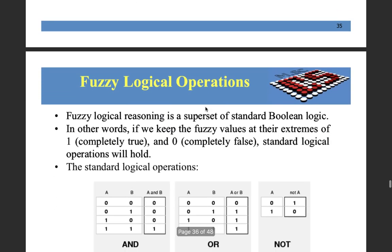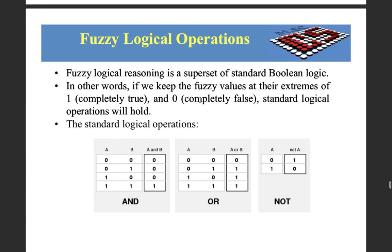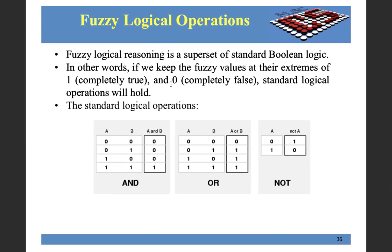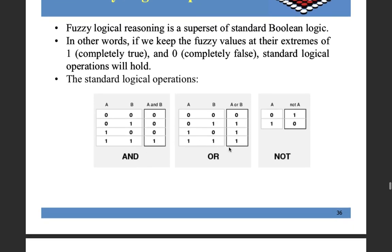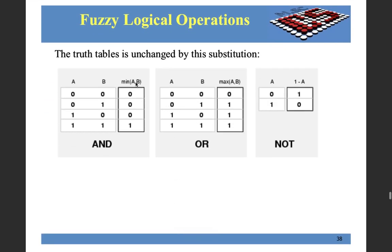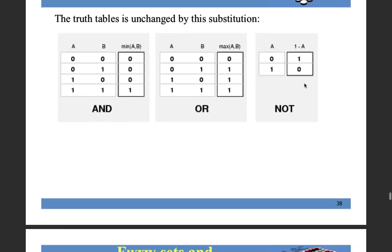So in logical operations, in binary, as you know, A and B, if both A and B are true, then it's one. Else, it's zero. Similarly, in fuzzy logics, it's minimum of membership function of A and B, maximum of membership function of A or B in the case of or, and in the case of not, it's one minus membership function of A.